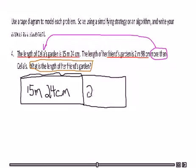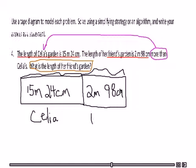So what I'm going to do is go ahead and add this which is 2 meters and 98 centimeters. And what I need to do from here is identify this is Celia and this is her friend.